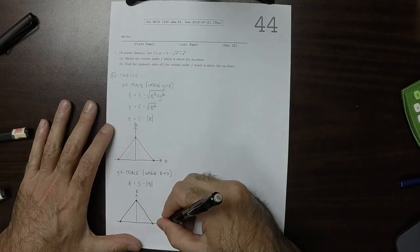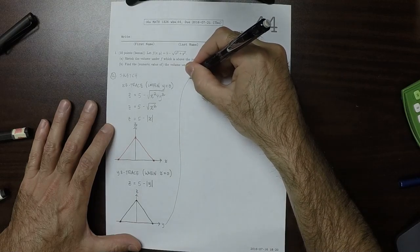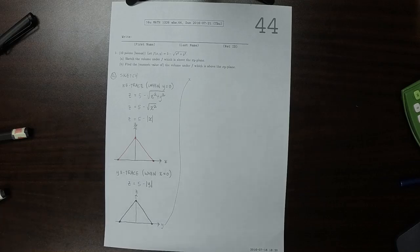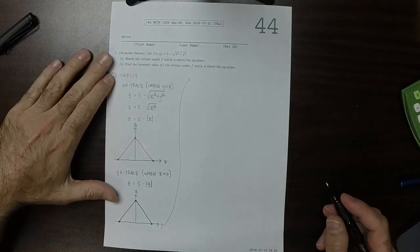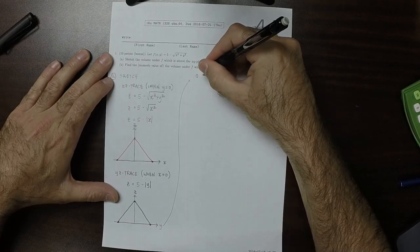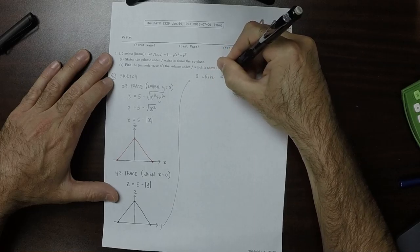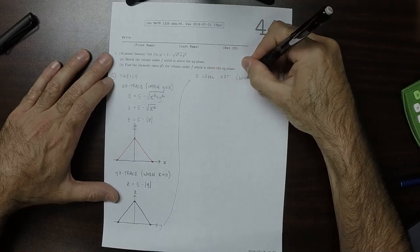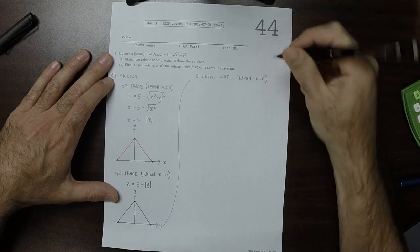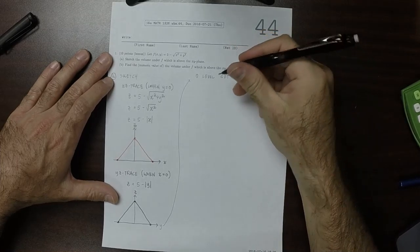And then one more will help us see what's going on. Let's do the 0 level set. That is to say when z is 0. So we took y is 0, x is 0, and z is 0. So when that's the case,